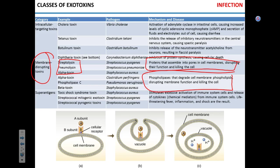The second class is superantigens. We discussed these when talking about Streptococcus pyogenes or Staphylococcus aureus and toxic shock syndrome. Toxic shock syndrome toxin from Staphylococcus aureus leads to the activation of virtually every cytotoxic T cell in the body, causing massive release of cytokines, massive inflammation, vasodilation, and hypovolemic shock — over-activation of the immune system.